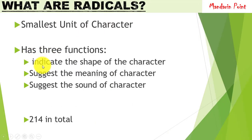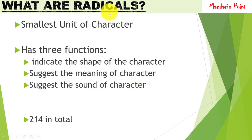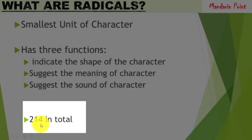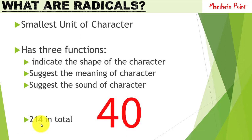Radicals have three major functions: they either indicate the shape of the character, suggest the meaning of the character, or suggest the sound of the character. These radicals play an important role in understanding Chinese characters. Without knowing and remembering them, you cannot master Chinese characters. There are 214 in total, but we will study only 40 of the most crucial and important ones.